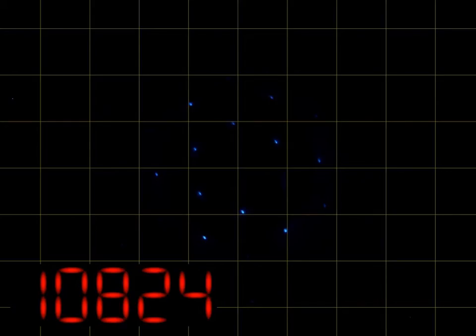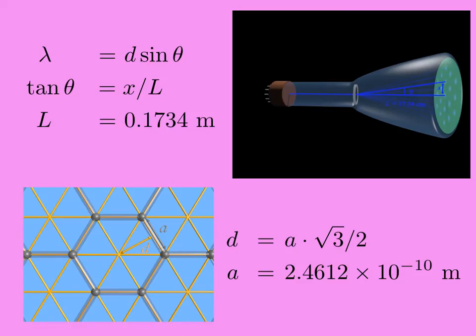The wavelength, lambda, is equal to D sine theta, where theta is the first-order diffraction angle. We have already seen that since the tangent of the theta is equal to the spot separation X divided by the distance L between the graphite and phosphor screen. For the Sargent-Welsch tube, the distance L is measured to be 17.34 centimeters.